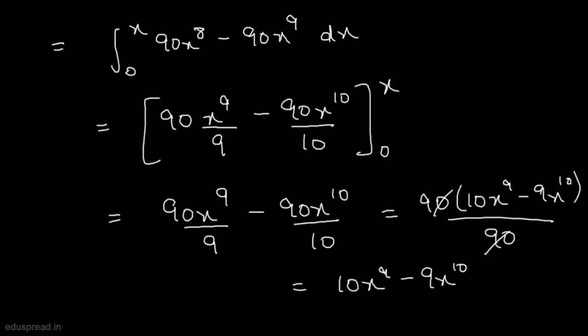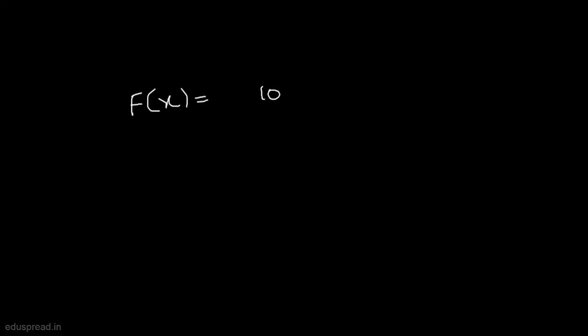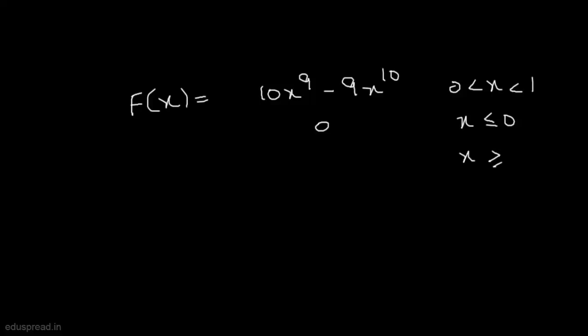So the cumulative distribution function for values of x between 0 and 1 is F of x equals 10x raised to the power 9 minus 9x raised to the power 10. For x less than or equal to 0, F of x equals 0, and for x greater than or equal to 1, F of x equals 1. This is our CDF and this is all about part A. Let's move to part B.